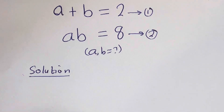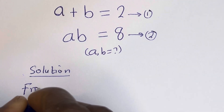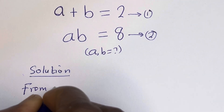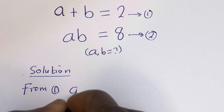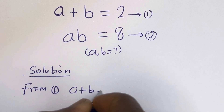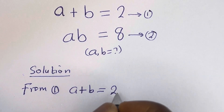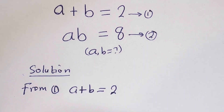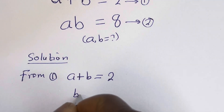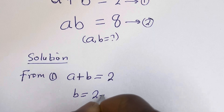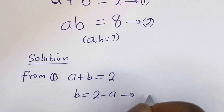We have a plus b is equal to 2 — let's call this equation 1. And ab is equal to 8 — let's call this equation 2. Then, from equation 1, a plus b is equal to 2. Let's make b the subject of the formula: b is equal to 2 minus a. Let's call this equation 3.